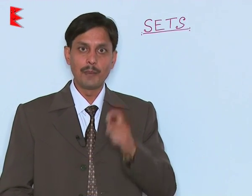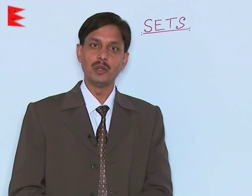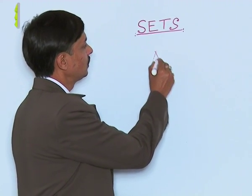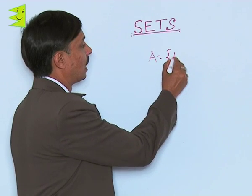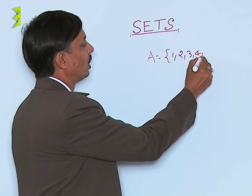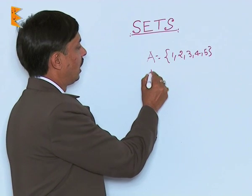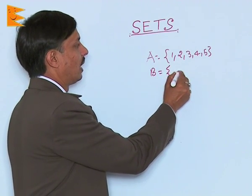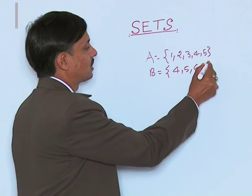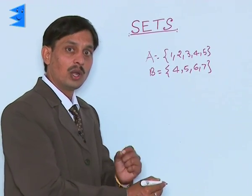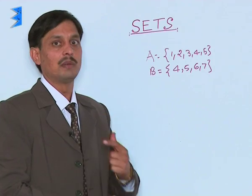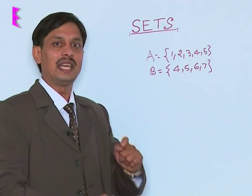To explain with an example: let set A contain the elements 1, 2, 3, 4, 5, and set B is another set having the elements 4, 5, 6, 7. If I want to find the union of set A and B — that means A union B.